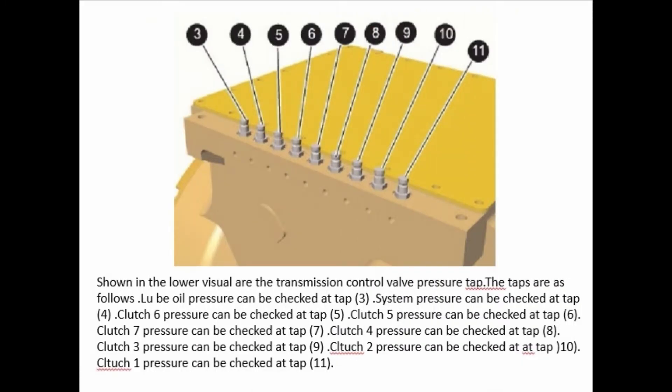Shown in the lower visual is the transmission control valve pressure tap. The taps are as follows: tap 9 is for clutch 2, pressure can be checked at tap 10. Clutch 1 pressure can be checked at tap 11.